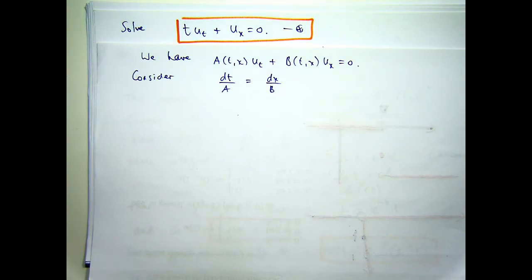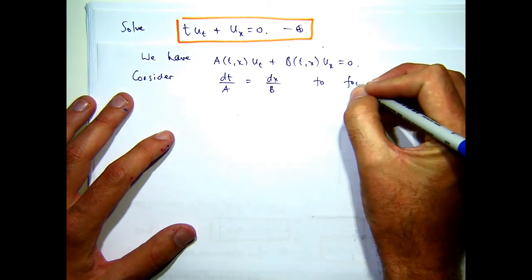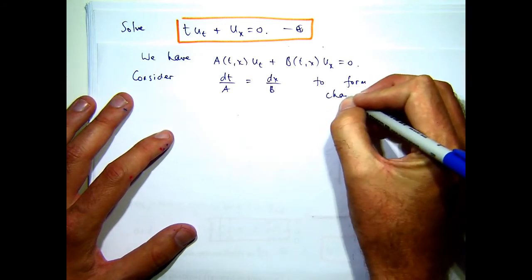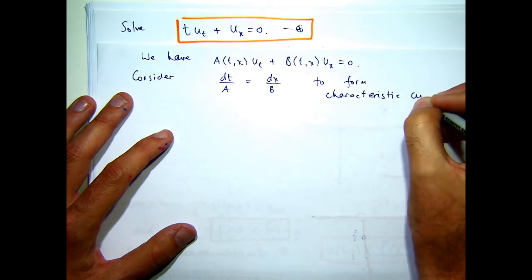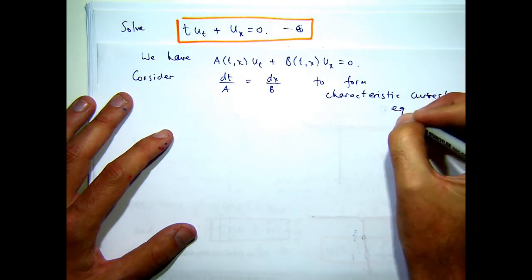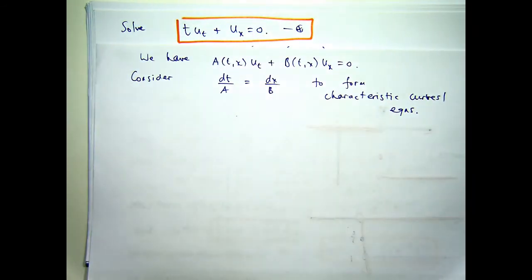And from those, that bottom line, I guess it's in a differential form, you can come up with the characteristic curve through integration or some other method perhaps. So let me show you how it relates back to star.